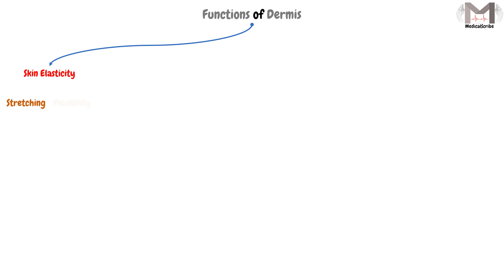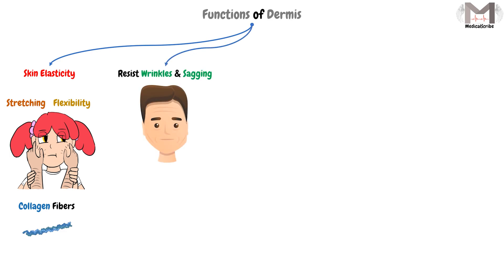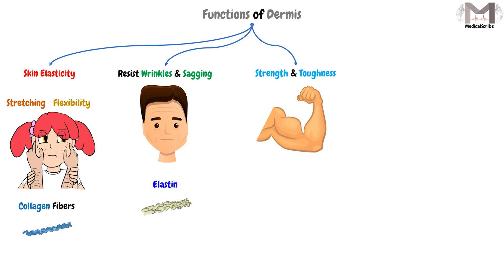The dermis layer has four main functions. First is skin elasticity — it allows skin stretching and gives it flexibility because of collagen fibers. Second, it makes the skin resist wrinkles and sagging because of the elastin. At the same time, it gives the skin strength and toughness, also because of the elastin.